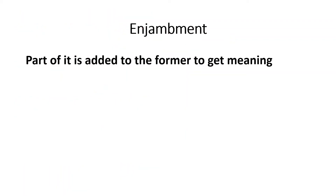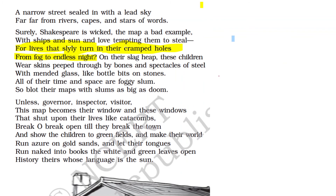Now enjambment — part of a sentence is carried over to the next line so you must combine them to get the complete meaning. That is called enjambment. Look at this: 'for lives that slyly turn in their cramped holes from fog to endless night.' To get the complete meaning we have to combine these two lines. Such usage is known as enjambment. These are the poetic devices used in 'An Elementary School Classroom in a Slum.'